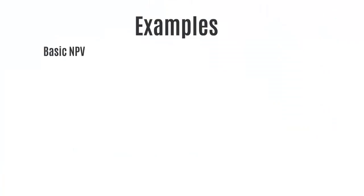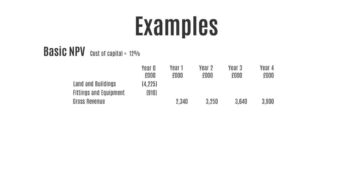We'll start with a basic net present value for a company called Buzzing Batteries, who after a successful few years are looking to expand and open up three new shops, so they're able to start selling their batteries directly to the public. Instead of building a shop from the ground up, the company have decided to acquire three retail properties. They know the cost of capital is 12% and they have the following cash flows forecast for this project.